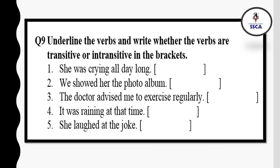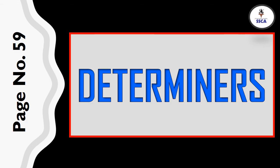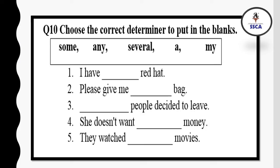The last topic is determiners, page number 59. Open your books and study about determiners. Here, you will have to put the correct determiner in the blank. To do that, you will have to read about determiners first and do a revision. After that, you will solve this exercise — question number 10.